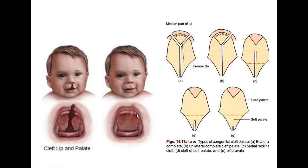This concludes the topic of soft and hard palate. Soft palate commonly comes as a main question or as short notes. You should remember the five muscles, the mucosa and lining epithelium, arterial supply, venous drainage, lymphatic drainage, and nerve supply of all these muscles. Thank you.